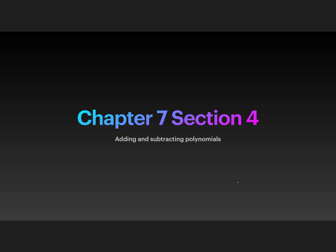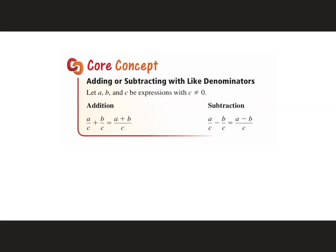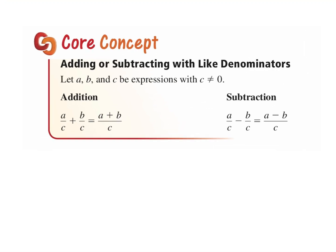Section 7.4 — we're going to be adding and subtracting polynomials. We're going to be adding fractions. When we add or subtract fractions, we need like denominators. This is a must — we have to have a common denominator.